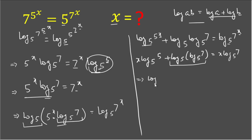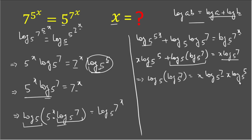We keep the log terms on the left and rearrange: log base 5 of 7 equals x · log base 5 of 7 minus x · log base 5 of 5. We then take x as a common factor on the right-hand side, giving log base 5 of 7 = x · (log base 5 of 7 − log base 5 of 5).